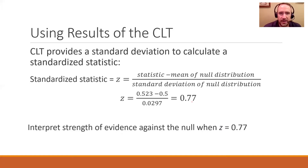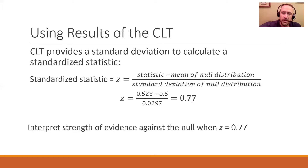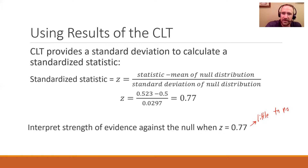Pause and ask yourself: what is the strength of evidence against the null with a standardized statistic of 0.77? If you'll recall, that is less than 1.5, so this is little to no evidence against the null hypothesis. We have very little evidence against the null hypothesis, which means we wouldn't reject it — the null says 50-50, kids are choosing toys just as often as they're choosing candy. And that's the conclusion we would come to from this study.